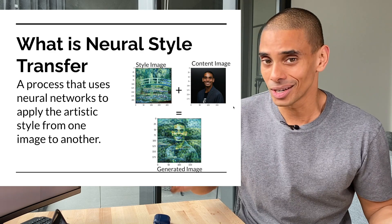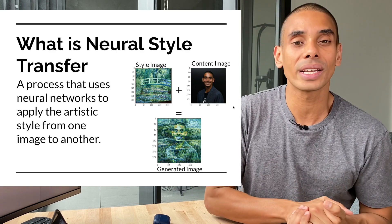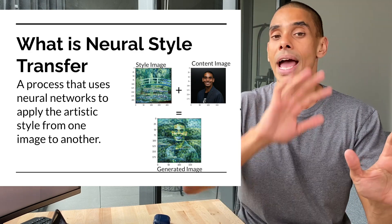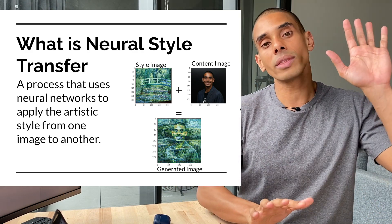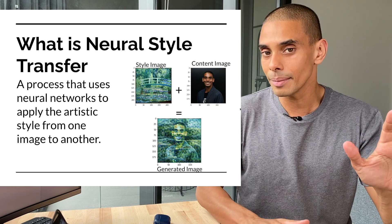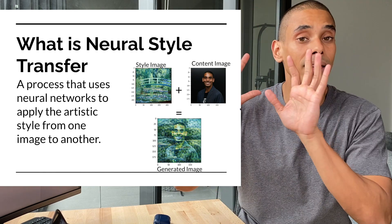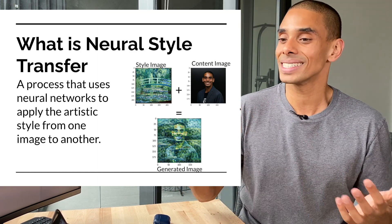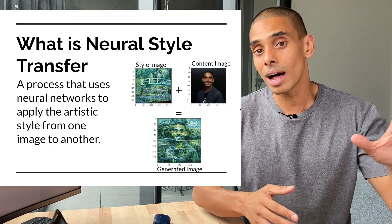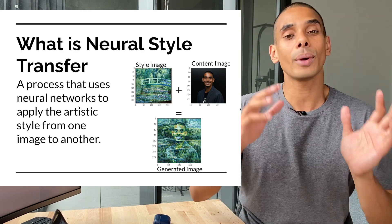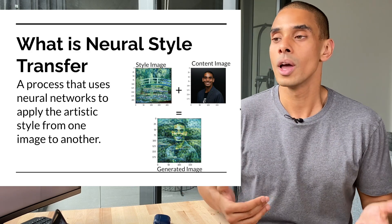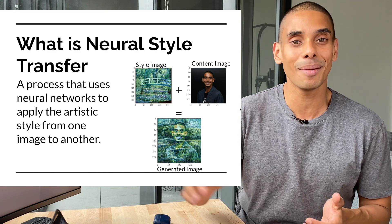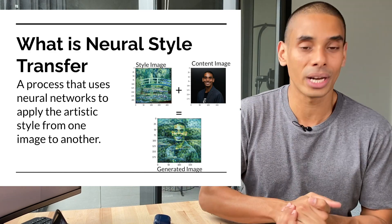So first up, what is neural style transfer? Neural style transfer is the process of using a neural network to take the style from one image and apply it to a completely different image. We call the first image the style image and the second image the content image. What we then get out of that is a stylized image. From the slide, we have a style image from one of Monet's famous paintings and a content image which is a profile of myself. We then apply neural style transfer to generate a generated image. So this is neural style transfer in a nutshell.